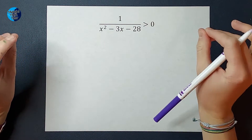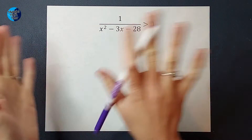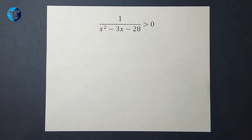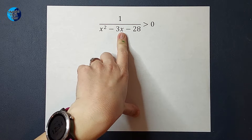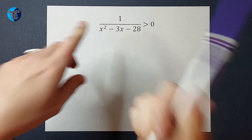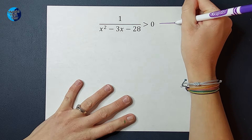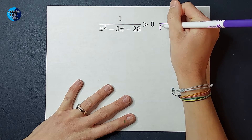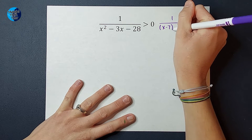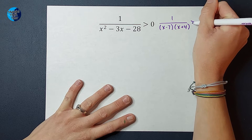All right. So the first thing we want to do is already done here — we want to get everything on one side, zero on the other side. We're good here. The next thing I want to do is see if anything can factor. I see that my denominator can definitely factor. If you need a factoring review, I'll link it in the corner, but I'm just going to tell you what this factors to. So I've still got one on top. On the bottom, I'm going to have X minus seven times X plus four, and we're still greater than zero.